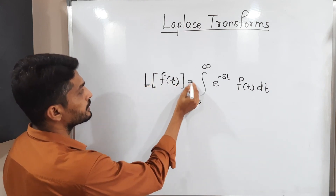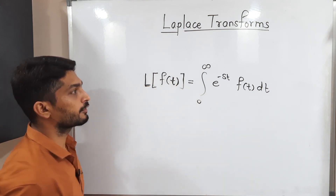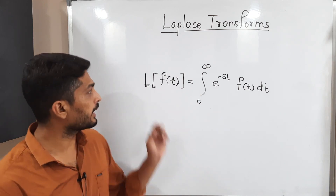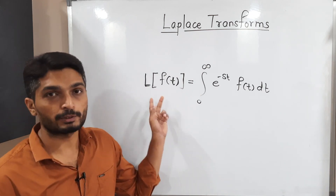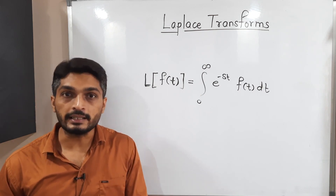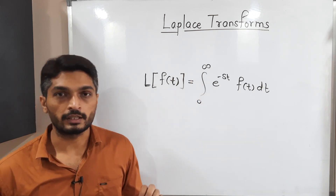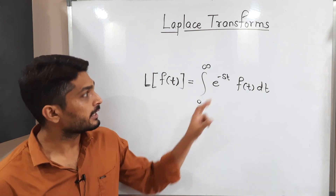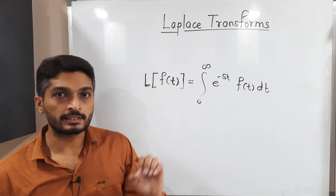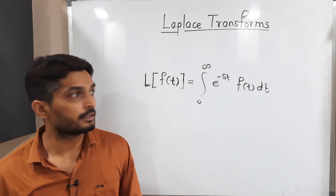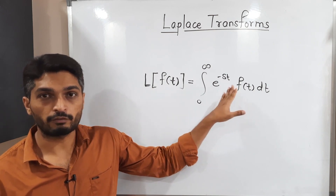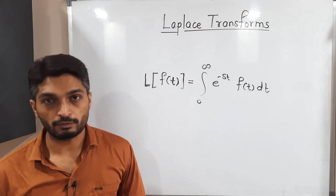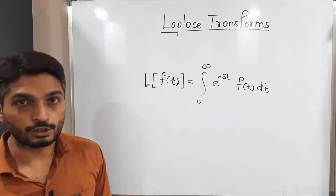So when we have any function f(t) and we apply the Laplace transform, its definition contains integration with limits always from 0 to infinity, e raised to minus st is always there, and f(t) — whatever function we have — we put it there. We get the Laplace transform of f(t) by solving this integration.